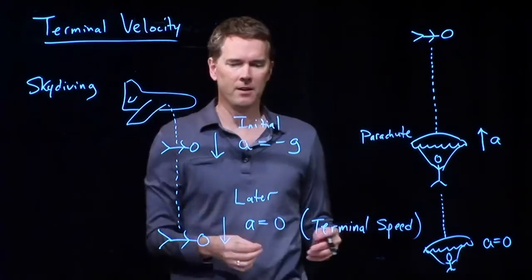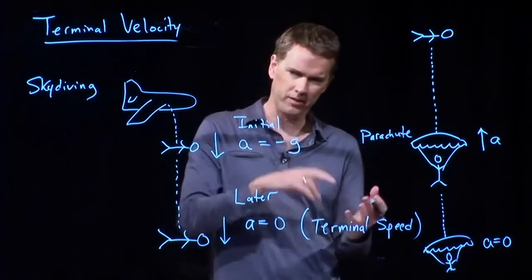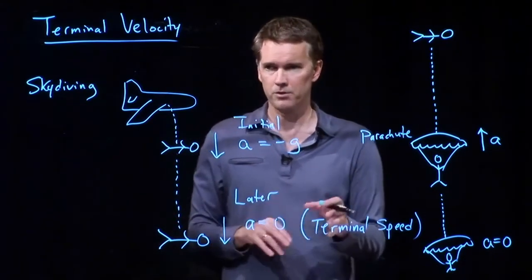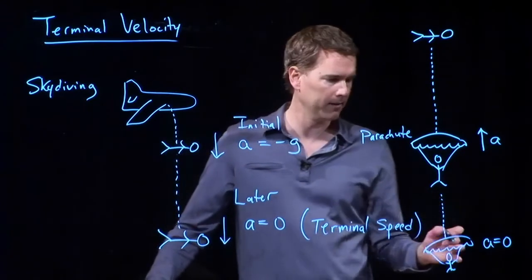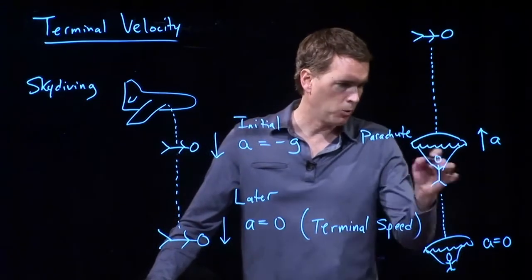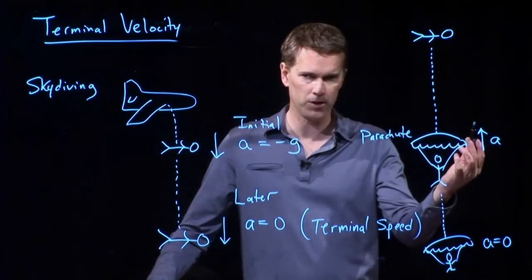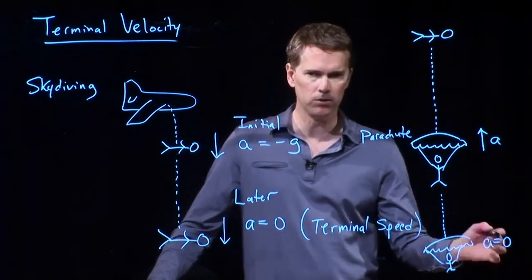So, terminal velocity depends on some parameters. It depends on your cross-sectional area. It depends on the density of the air. It depends on things like drag coefficients. But it also depends on all these forces and how they interact. And when you have a big, wide-open parachute, initially, it's going to provide an acceleration upwards. But eventually, you get back to a new terminal speed.